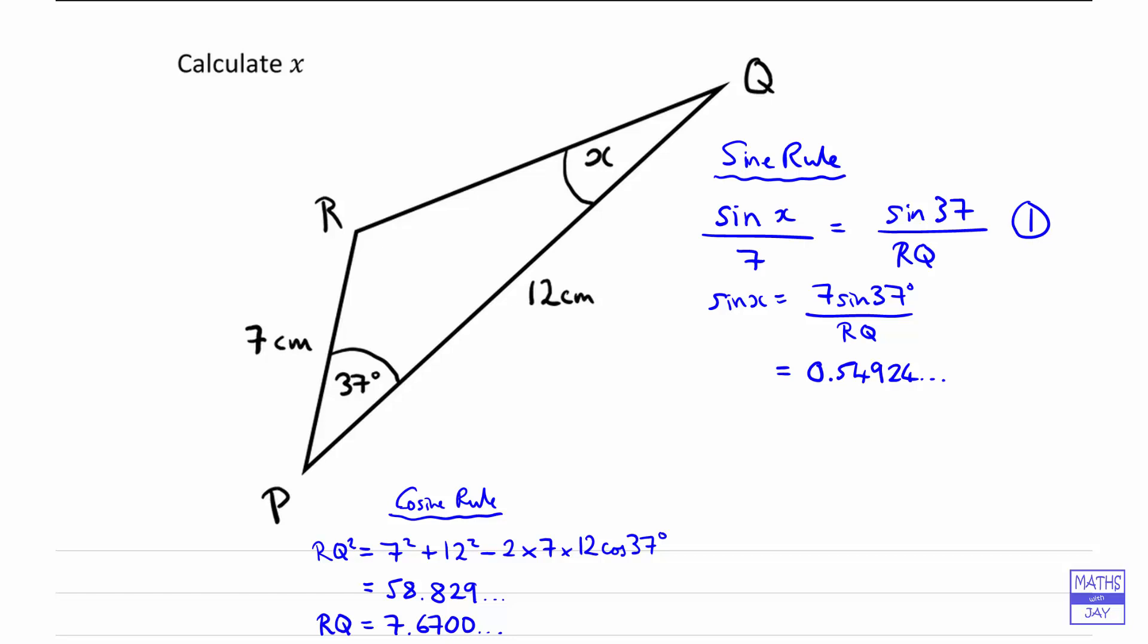And then you'll find the angles whose sine is equal to that by using the inverse sine button, and that will give you 33.315 and so on. And so to the nearest degree, the angle comes out as 33 degrees.